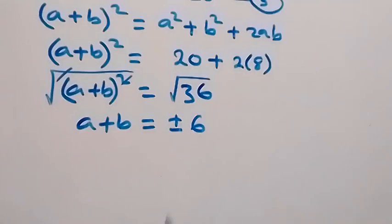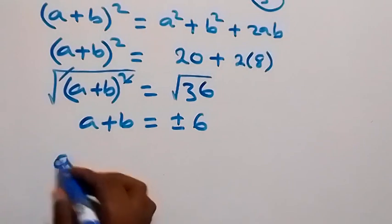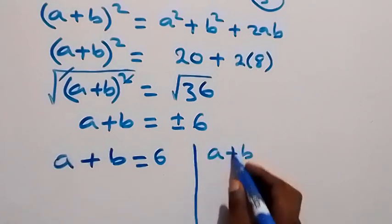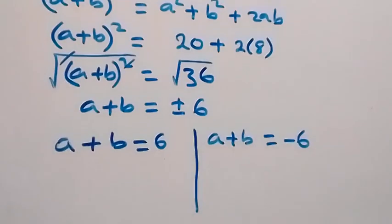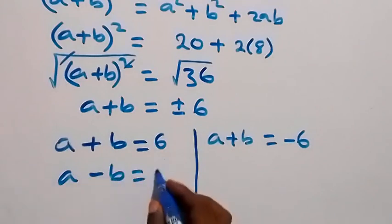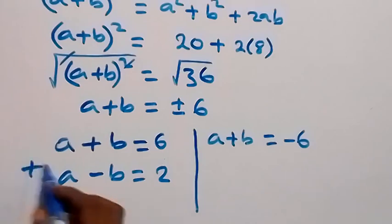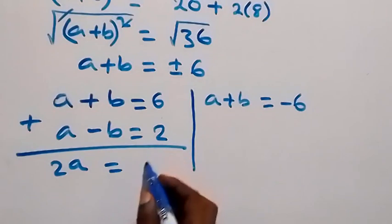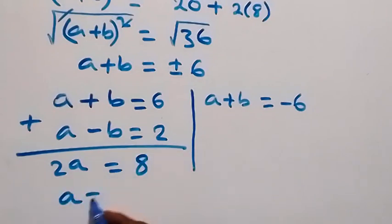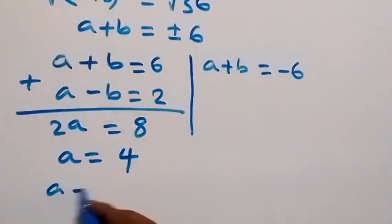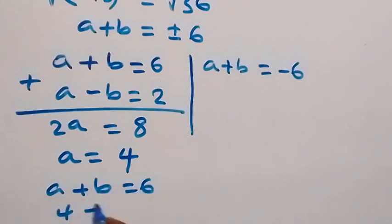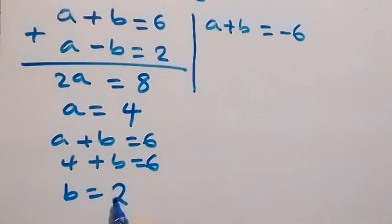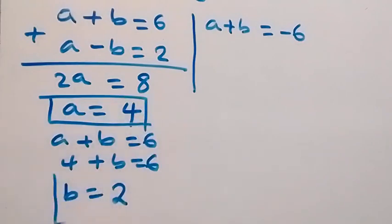This gives two possible cases: case one, a + b equals 6, and case two, a + b equals minus 6. Taking case one together with equation 1 (a minus b equals 2) and adding, we get 2a equals 8, so a equals 4. Then from a + b equals 6, we get 4 + b equals 6, so b equals 2.